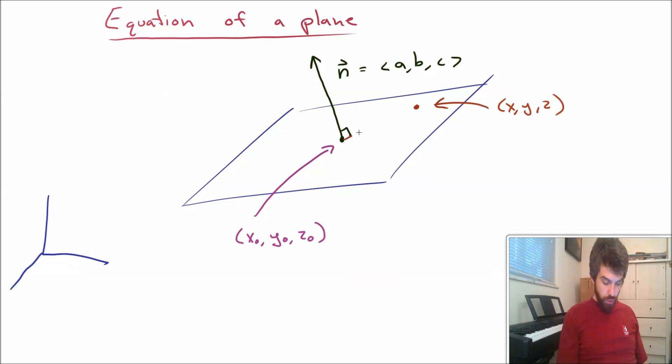So, for example, here is one vector that lies inside of the plane, but it's only one of many, that this vector also lies inside of the plane, and that vector also lies inside of the plane. And then my claim here is that this normal vector is going to be orthogonal to every possible vector, to every vector in the plane.